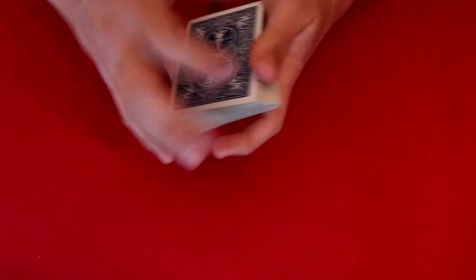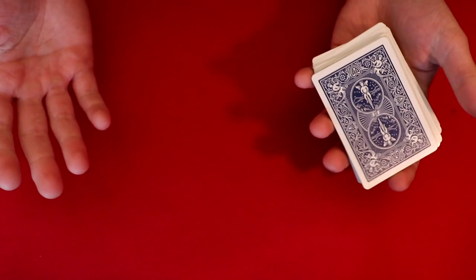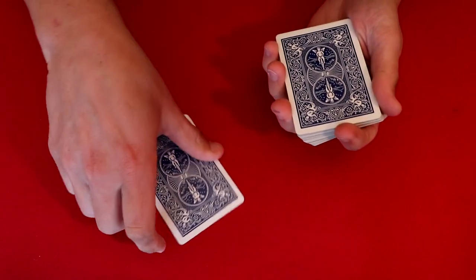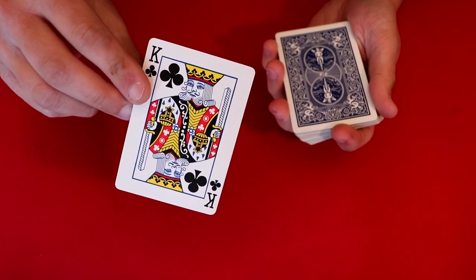And you really can get any deck of cards. You can use a borrowed one from the spectator. You can have them shuffle the cards. It really doesn't matter because they're going to pick whatever card they want to begin with. So they pick a random card. In this case, it is the king of clubs.